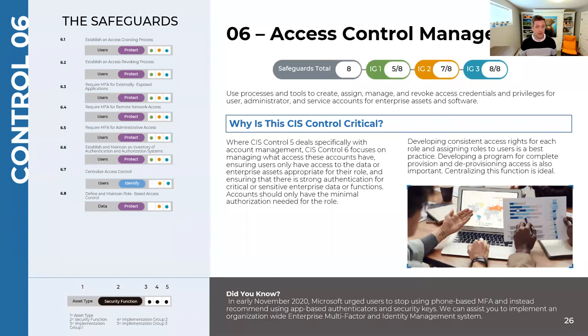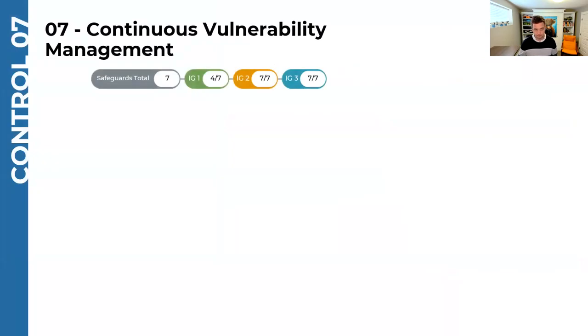As much as possible, we want to leverage tools like Microsoft 365 for single sign-on and Azure Active Directory. That will be specific to each individual organization — what's available and what makes sense for them. Items 7 and 8 are implementation groups 2 and 3, very enterprise-level types of solutions, and your platforms have to support those.